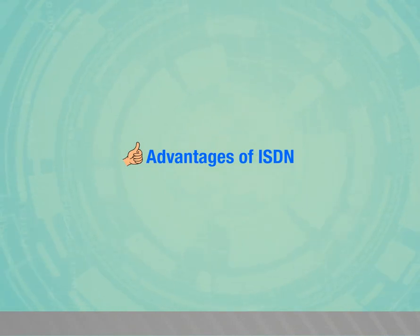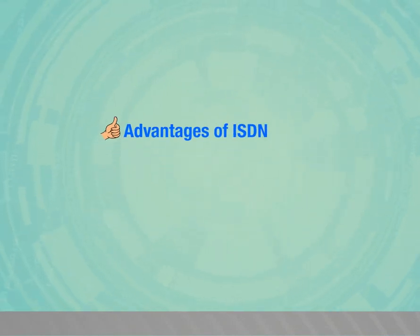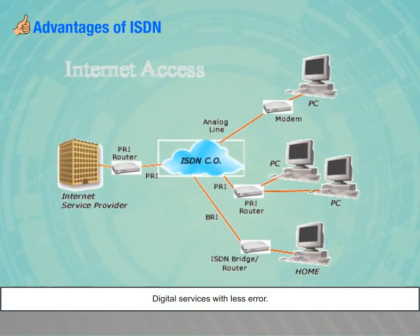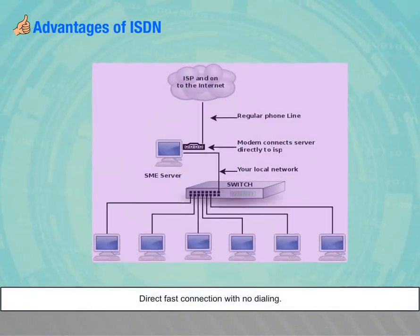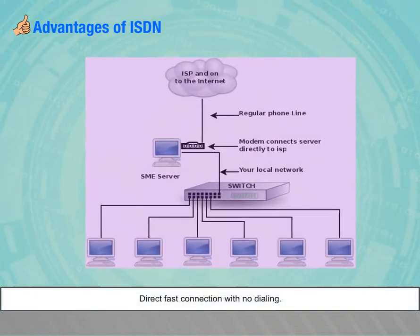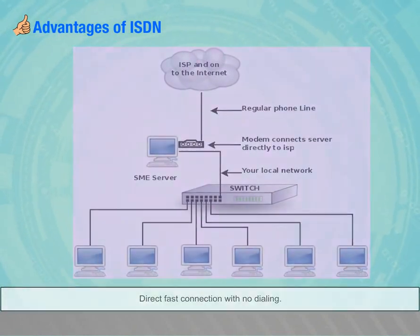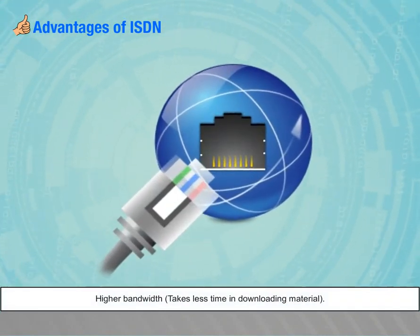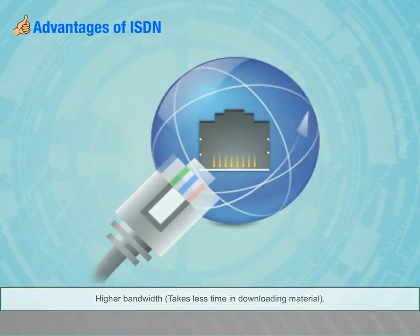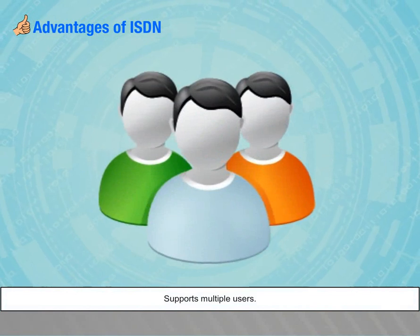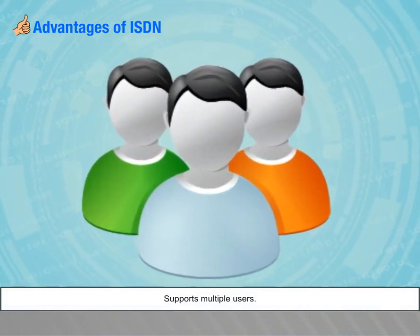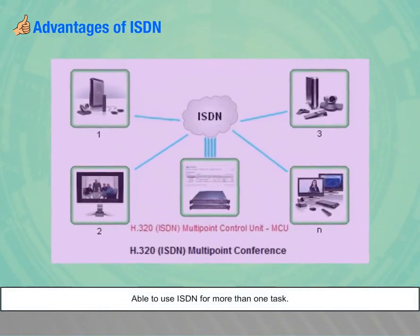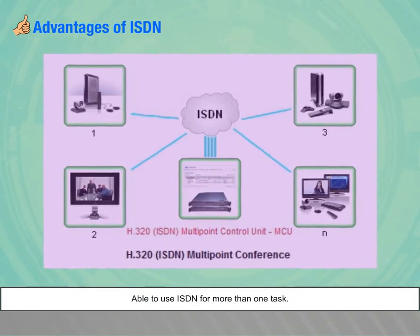Advantages of ISDN: Digital services with less error, direct fast connection with no dialing, higher bandwidth that takes less time in downloading material, supports multiple users, and the ability to use ISDN for more than one task simultaneously.